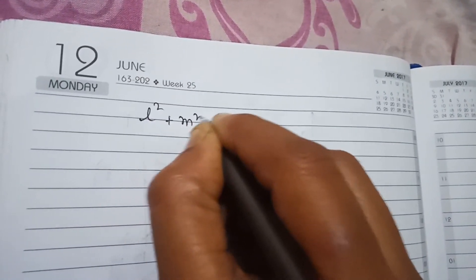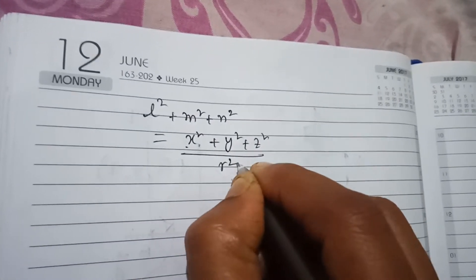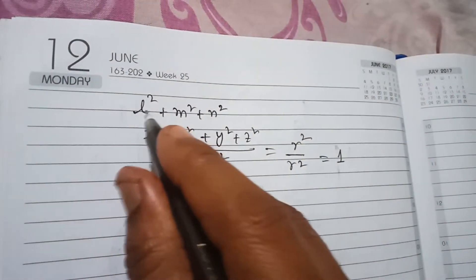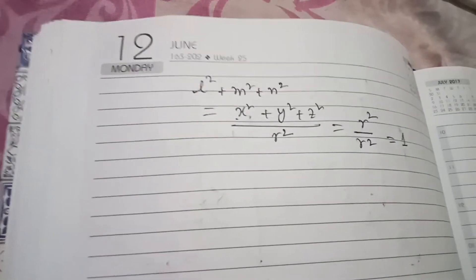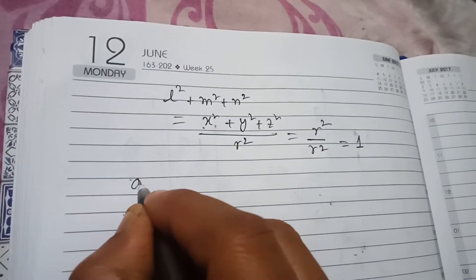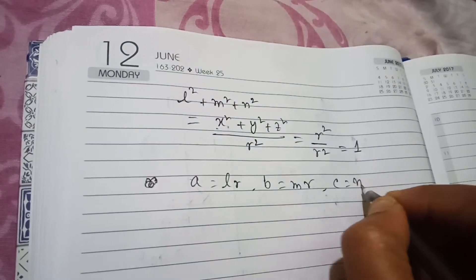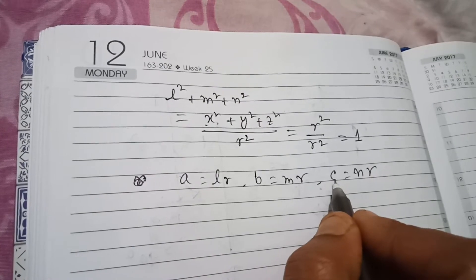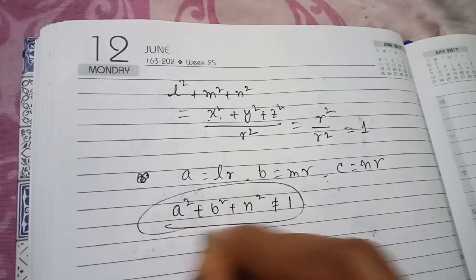Now l² + m² + n² = (x² + y² + z²) / r² = r²/r² = 1. So l² + m² + n² = 1 — you have already done this in the previous video on three-dimensional geometry, so you can always relate vector algebra and 3D geometry together. For direction ratios, if a = lr, b = mr, c = nr, then l, m, n are the general notation for direction cosines and a, b, c are the general notation for direction ratios. Note that a² + b² + c² is not equal to 1 in general.